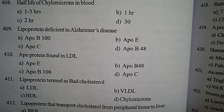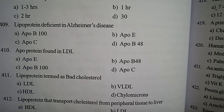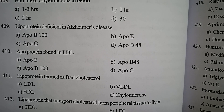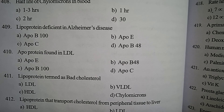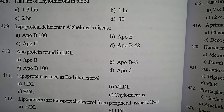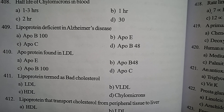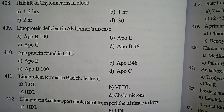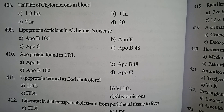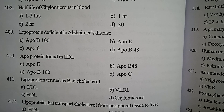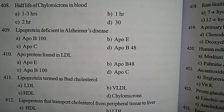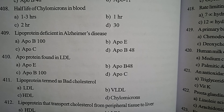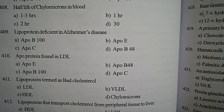Next one: lipoprotein termed as bad cholesterol — option A LDL, option B VLDL, option C HDL, option D chylomicrons. Correct answer: option A, LDL — low density lipoprotein — because it transports cholesterol to various tissues, leading to atherosclerosis.